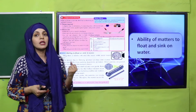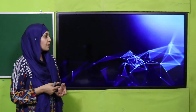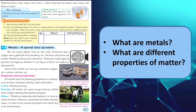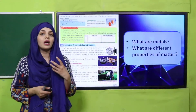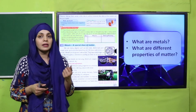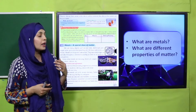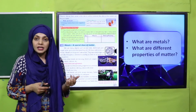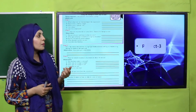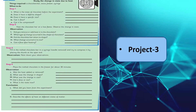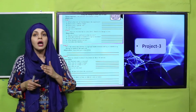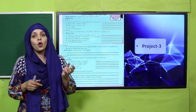Then we discussed metals. Metals are shiny and hard; most of them are solids, except mercury which is in liquid form. They are conductors of heat and electricity. We also did a project on the states of matter — how matter can change its state from solid to liquid and from liquid back to solid when heat is added or removed.